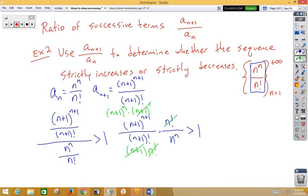So on the top, we clearly have n plus 1 to the n power. On the bottom, we have n to the n power. That's clearly going to be greater than 1. So this thing is strictly increasing again.